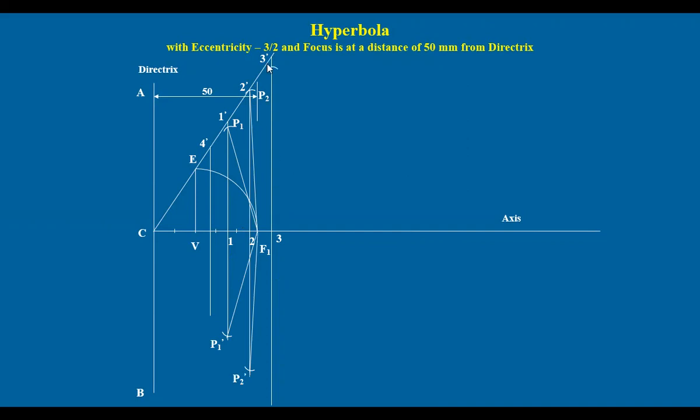3, 3 dash as radius, F1 as center, here one point P3, P3 dash here. With 4, 4 dash as radius, F1 as center, mark here you get P4, in the bottom P4 dash. Likewise we get a number of points.